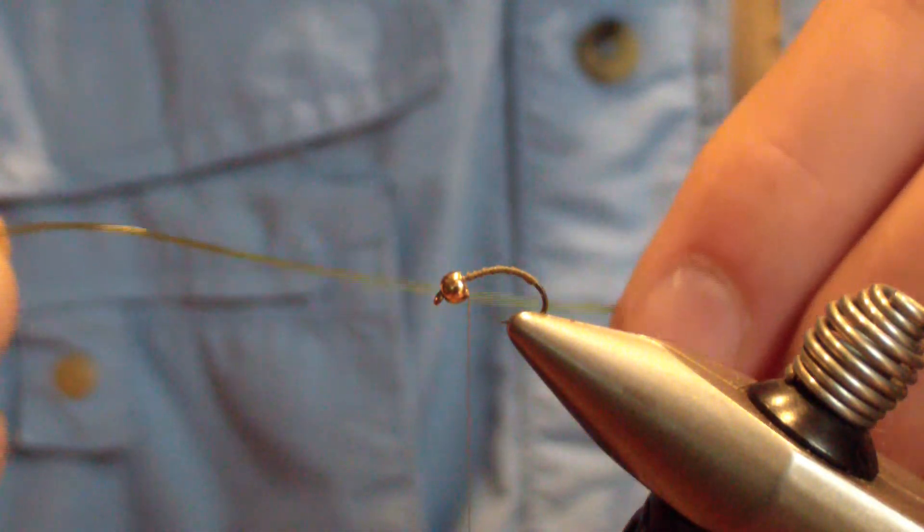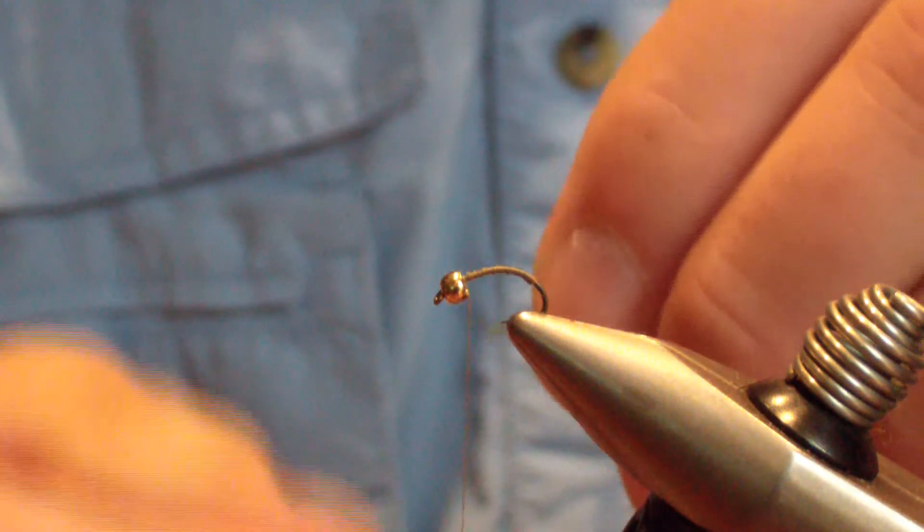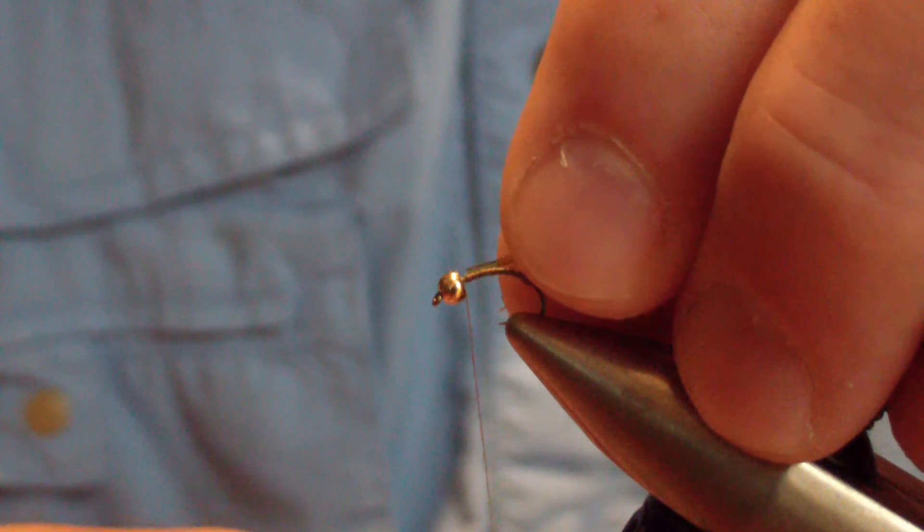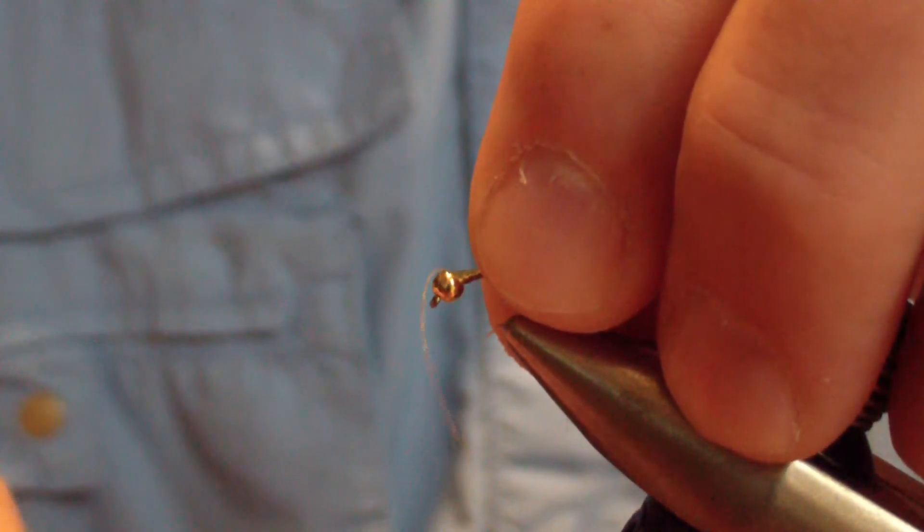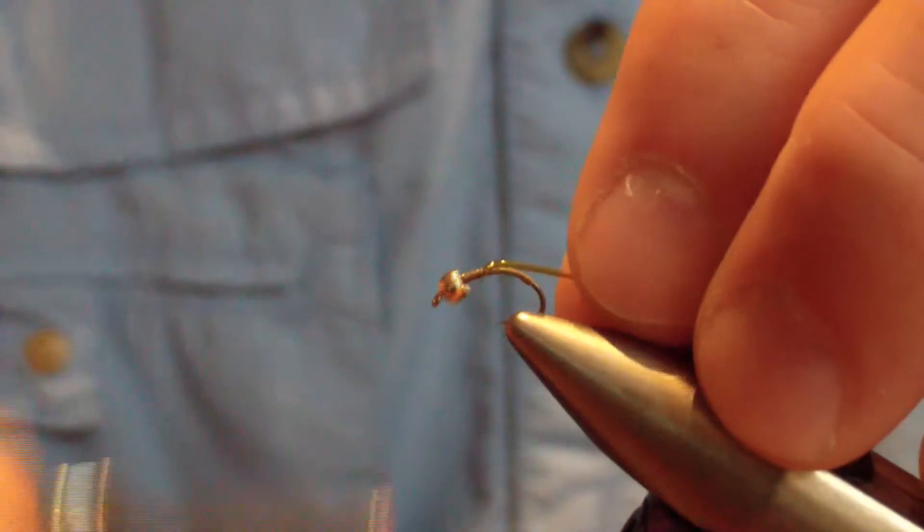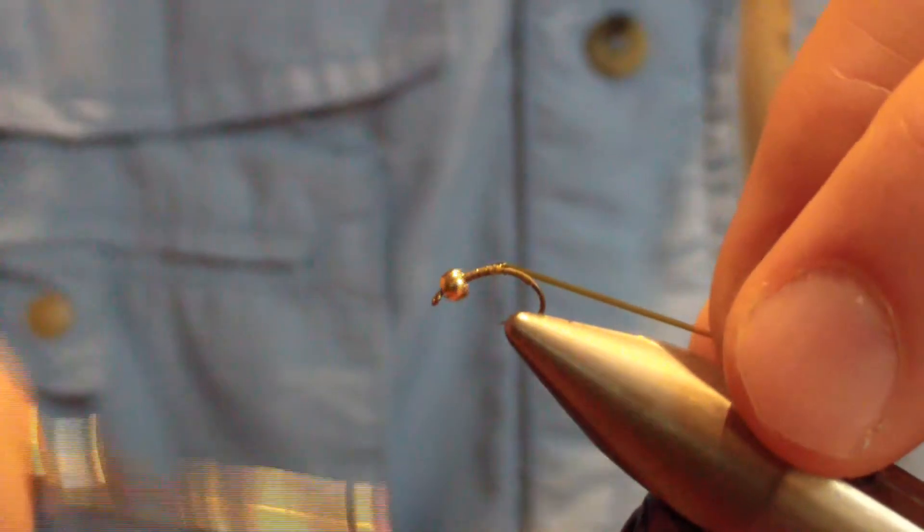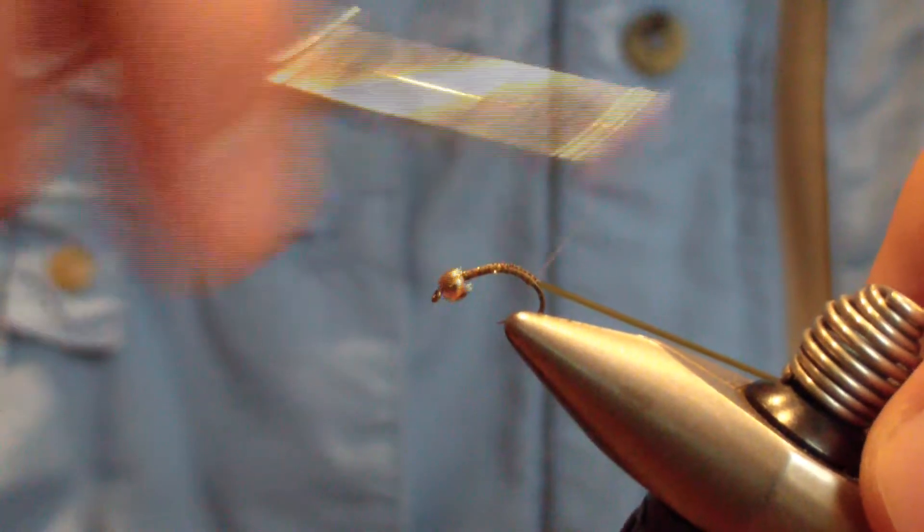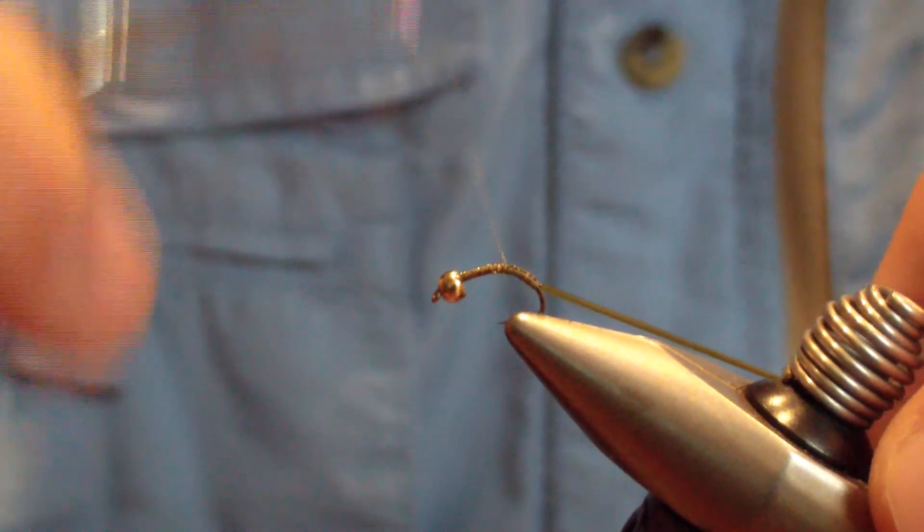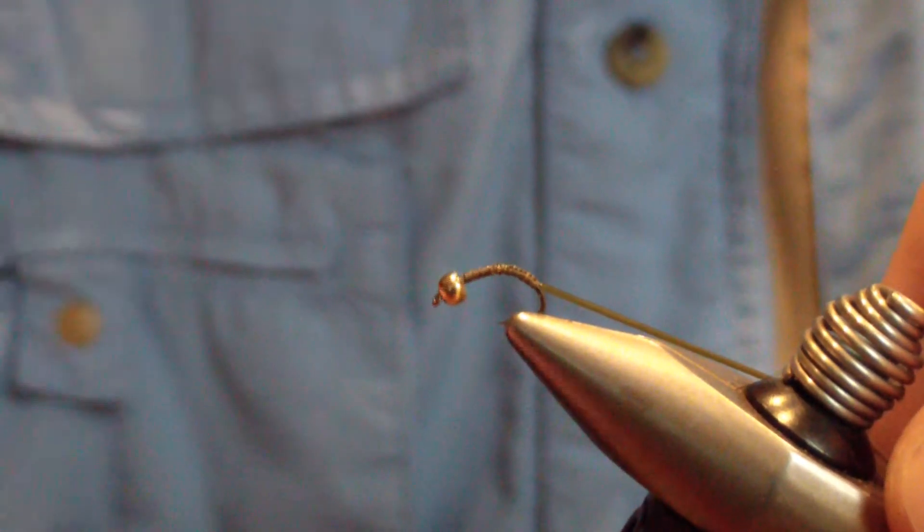The next material you're going to tie in is Olive Micro Tubing in the micro size. Seat that up inside the bead a little bit at the back and lock that down. By the time I get all my material on here, that tends to lock this smaller bead down. Wrap that back to the same point as the thread base, then bring your thread back up to the bead again.